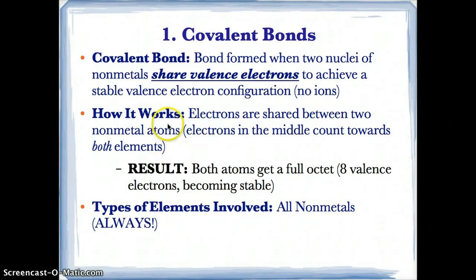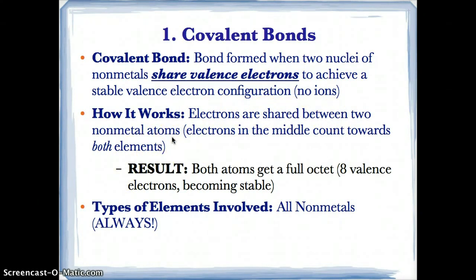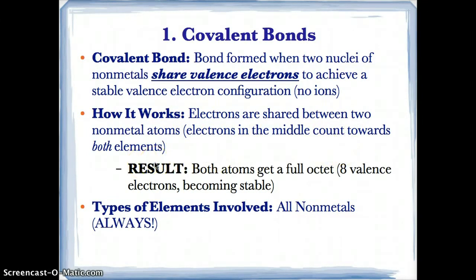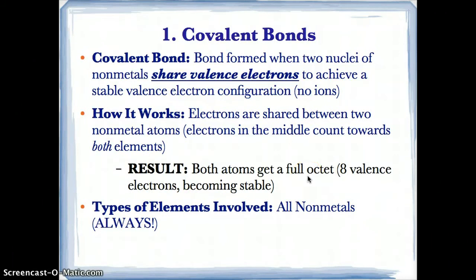Here's how covalent bonds are formed: covalent bonds form when electrons are shared between two nonmetal atoms. There are always electrons in the middle between the two nonmetal atoms in every covalent bond, since they're sharing. The electrons in the middle count towards both elements since they're sharing them, and the result is that both atoms wind up getting a full octet of eight valence electrons, making them stable.